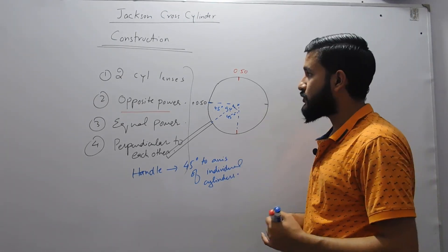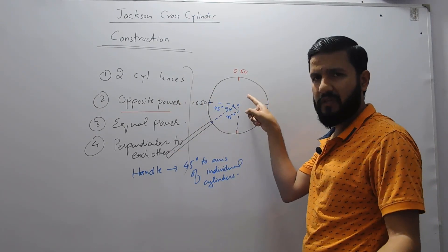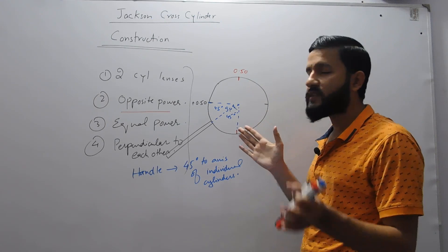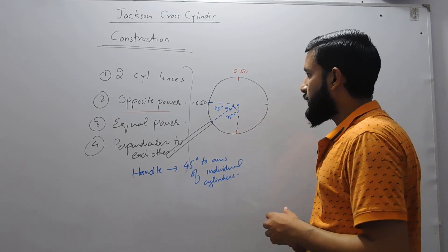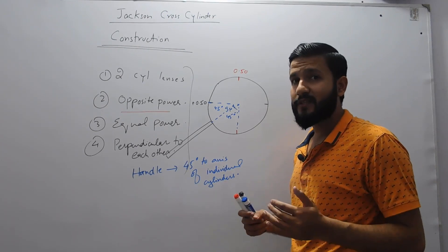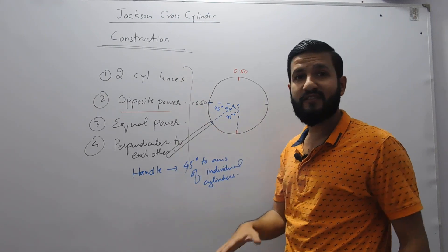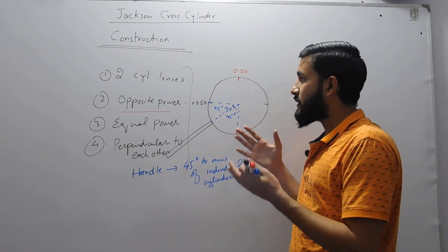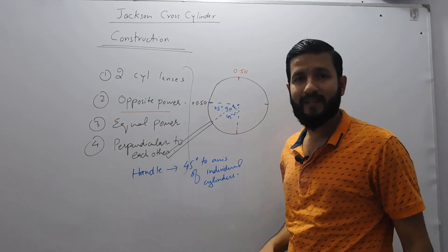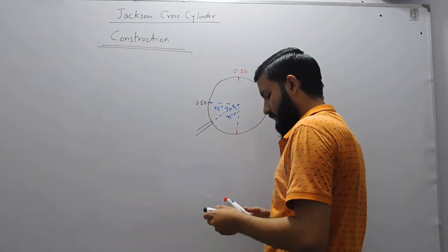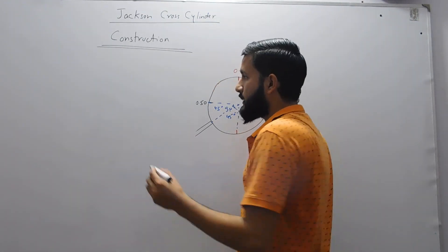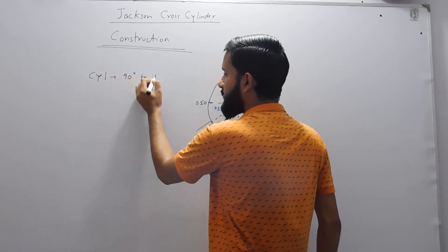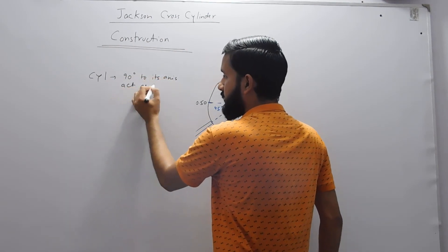To make a cross cylinder you take two cylindrical lenses of power, say minus 0.50 and plus 0.50, and merge them together. A common question students ask is: in the definition we say it is a sphero-cylindrical lens, but in construction we use only two cylindrical lenses — so how can spherical power be incorporated using two cylindrical lenses?